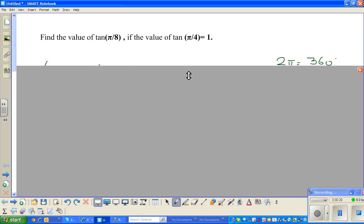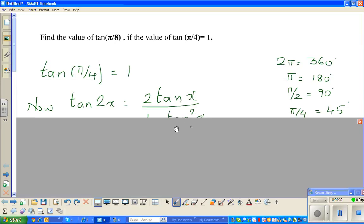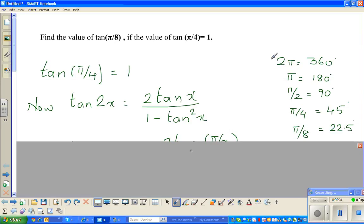Now I hope you know about radians. Let me go over radians. Now by definition, 2π means 360 degrees. So you can say π is half of 2π which is 180, π/2 is 90, π/4 is 45, and π/8 is 22.5. So when you're talking about π/4, in other words they're saying that tan 45 is 1. You want to find tan 22.5.